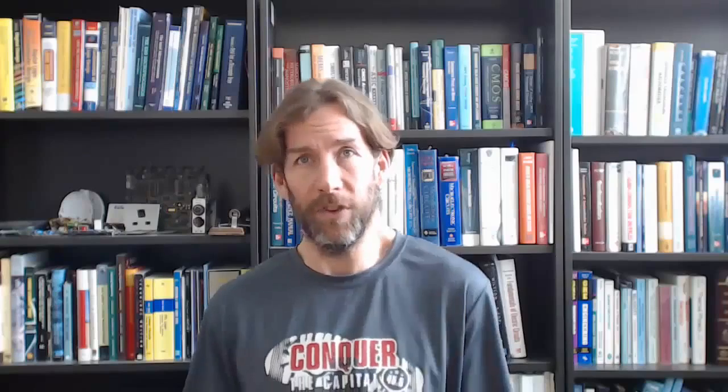More formally stated, Kirchhoff's Current Law says the sum of currents entering any node or closed boundary must add up to zero. This law should make sense to us if we have a little bit of background in physics. The principle here would be that of the conservation of charge. That is, charge cannot be created or destroyed, at least under normal circumstances.